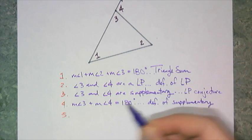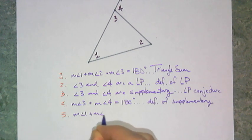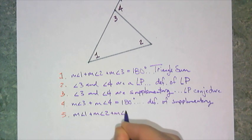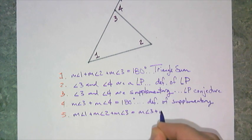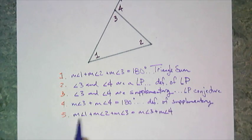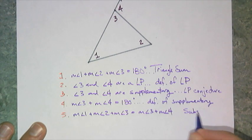Line 1 and line 3 both equal 180. So I could say that measure of angle 1 plus the measure of angle 2 plus the measure of angle 3 equals the measure of angle 3 plus the measure of angle 4. And what did I do? Yes, I did that substitution.